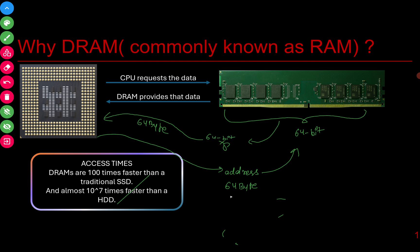Why do we need 64 bytes? The answer lies in the fact that whenever we access a particular memory address — let's say the address was of one byte — it is highly probable that nearby address cells will also be accessed. Research determined that the sweet spot is a 64-byte chunk. So whenever an address is sent to the CPU for fetching, the address belongs to a 64-byte chunk and 64 bytes are transferred from RAM to the CPU.